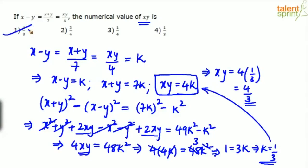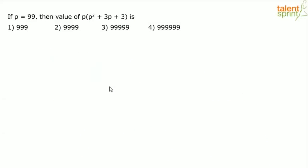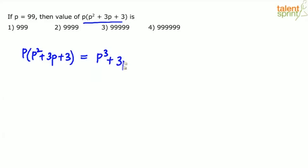Next question: if p = 99, find the value of p(p² + 3p + 3). The options are 999,999 or 99,999 etc. Expand: p × p² = p³, p × 3p = 3p², p × 3 = 3p. So we have p³ + 3p² + 3p.